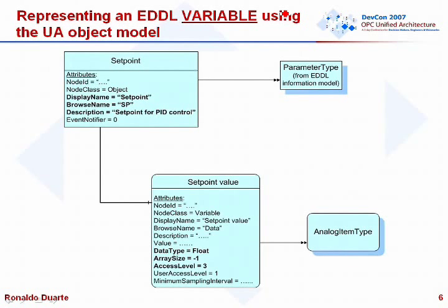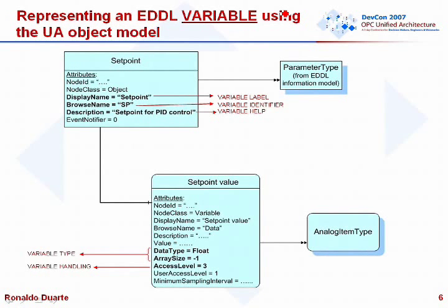The server accesses the EDD and fills the bold attributes with the information it finds. For instance, the information model tells me how to fill the description attribute for a parameter: go to the EDD and find the help string located there, then put that help string into the description variable. For the parameter value, go to the EDD again, get the type of the parameter, then fill the OPC UA node type accordingly. These nodes are interesting because they derive directly from the EDD.